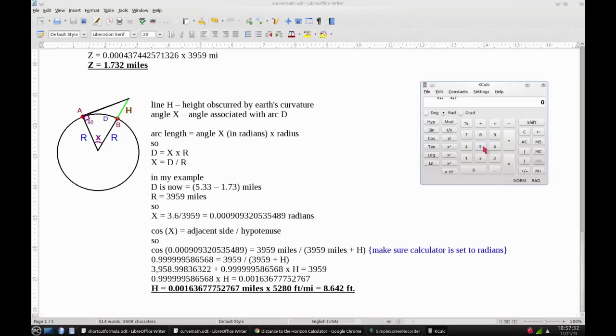And D in this case is going to be 5.33 minus 1.73, which is 3.6. So X equals 3.6 divided by 3,959. So our new angle X is this in radians.